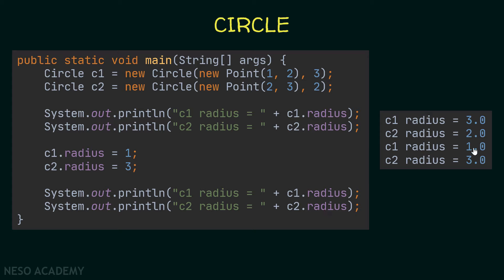The radius of c1 is equal to 1 and the radius of c2 is equal to 3. As you can see, each object has its own data. The radius of c1 has its own value and is independent from the radius of c2. So if you make a change to the radius of c1, this will not affect c2, and vice versa. Each circle c1 and c2 has its own memory — each object is independent from the other.